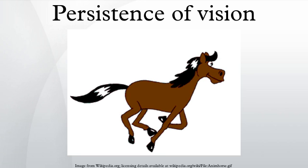Some scientists nowadays consider the entire theory a myth. In contrasting persistence of vision theory with phi-phenomena, a critical part of understanding that emerges is that the eye is not a camera and does not see in frames per second.